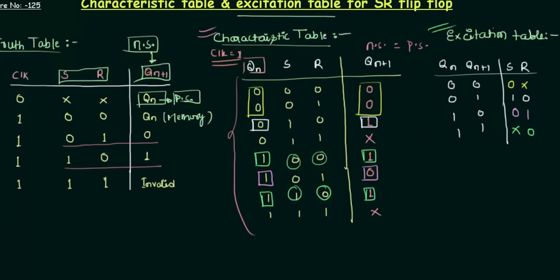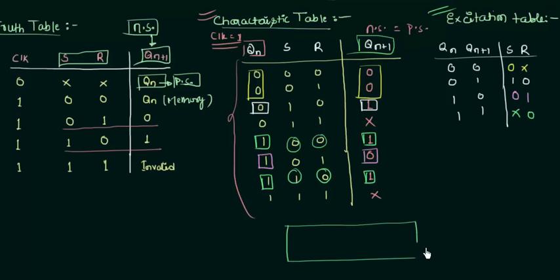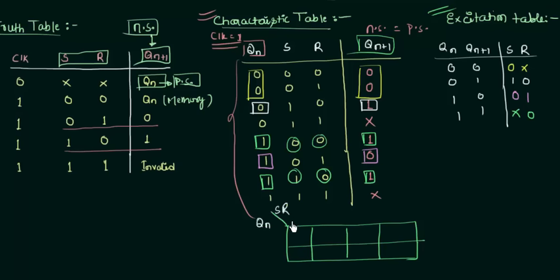One more thing to do here is to find out the expression for QN+1. To do that, you are going to make an 8-cell K-map because there are 3 inputs. In this 8-cell K-map the inputs are QN, S, and R.